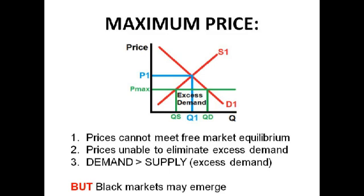This means that black markets might emerge, because people might think there's lots of demand, so they buy lots of tickets and sell them at a higher price. This is very bad and illegal. You hear of tickets going at ridiculous prices — thousands of pounds — in these kinds of secondary markets.